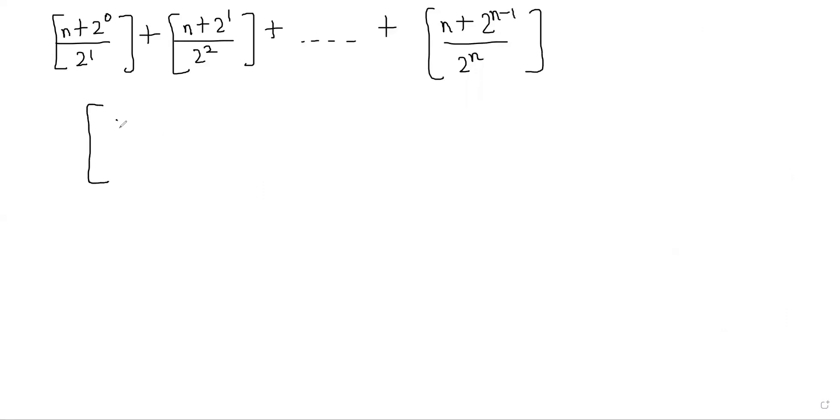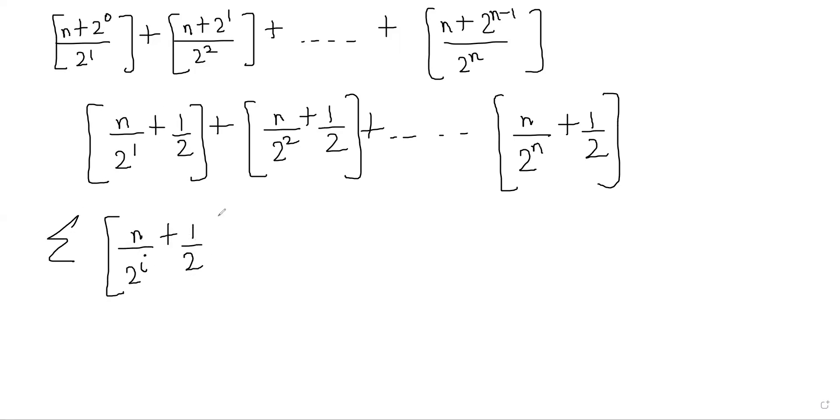This can be written as n by 2 to the 1 plus half, plus n by 2 squared plus half, and this pattern follows throughout. So basically, this is the summation of floor of n by 2 to the i plus half, where i goes from 1 to n.